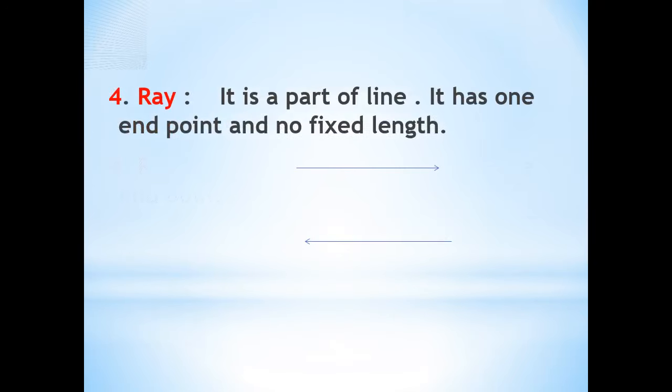Let us learn about ray. Ray is also the part of line. It has one endpoint and no fixed length. We are having two rays here: one is ray OP, another is ray BA. Ray OP has the starting point O but it has no endpoint and we cannot measure its length.